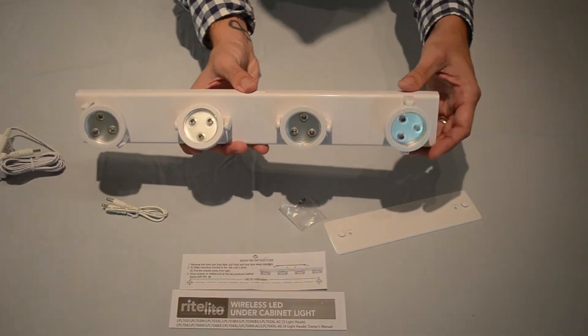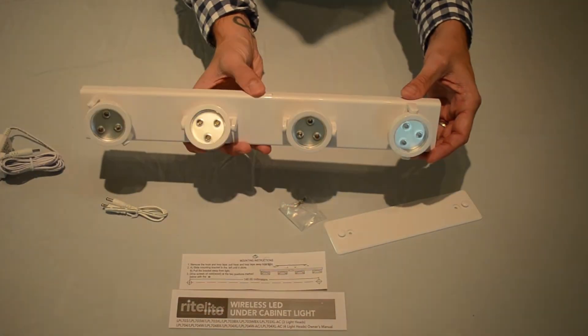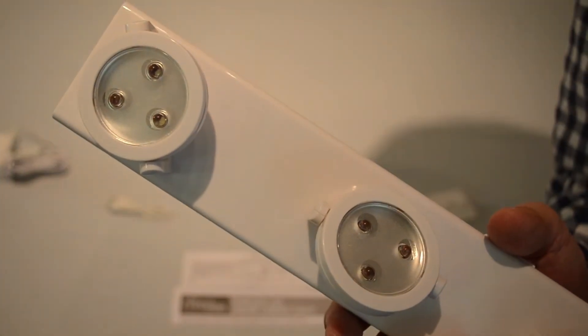This LED track light comes in a white finish and has an on-off dimmer switch. This wireless LED light fixture features 12 super bright LEDs.